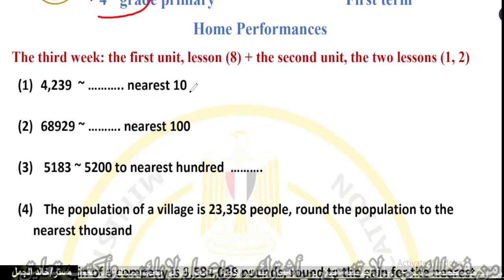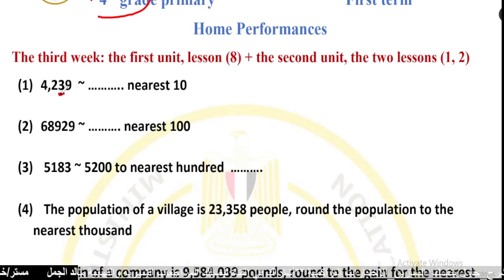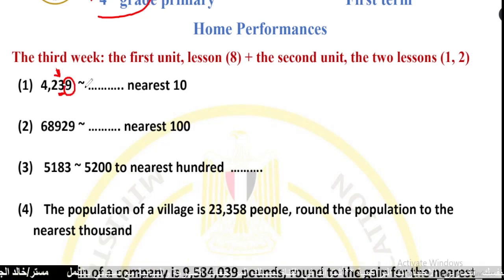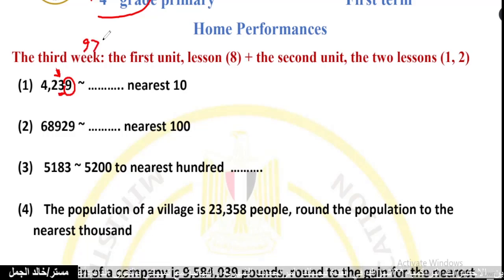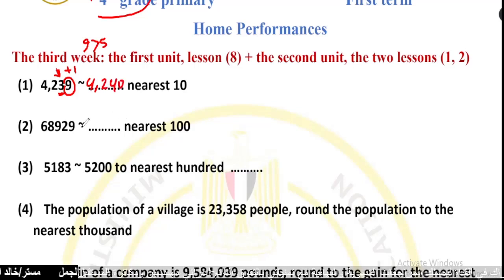We search for the nearest tenth place. The digit in the tenths place is 3. We look at the next digit: 9 is greater than 5, so I will add 1 to 3. The number rounded to the nearest tenth will be 4,240.